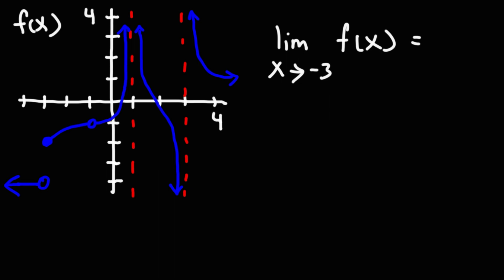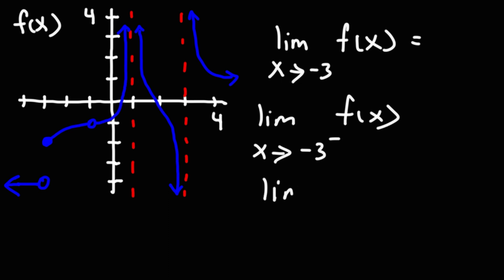What you need to do is check the left-sided limit as x approaches negative 3 from the left, and also the right-sided limit as x approaches negative 3 from the right, as indicated by the positive sign. If these two one-sided limits are the same, then the limit exists. If they have different values, the limit does not exist.